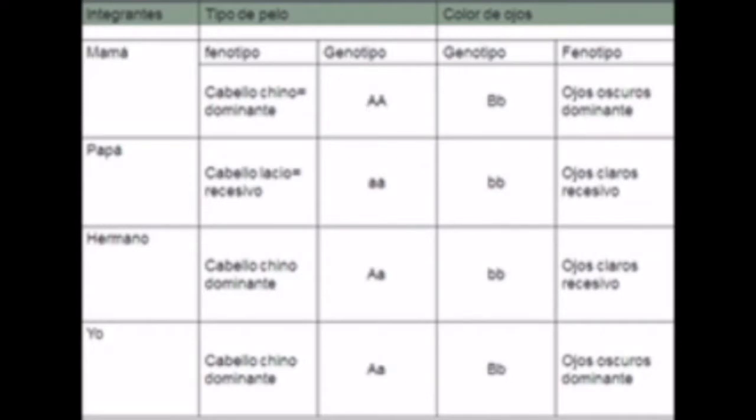En lo que concierne al color de ojos, tenemos a dos integrantes con características dominantes y dos integrantes con características recesivas, por lo que a los de ojos claros, que son recesivos, les pondremos dos 'b' minúscula. En el caso de los ojos oscuros, que es una característica dominante, ambas deben tener la combinación B mayúscula y b minúscula para que se pueda cumplir la condición de que recibimos un alelo de cada padre.